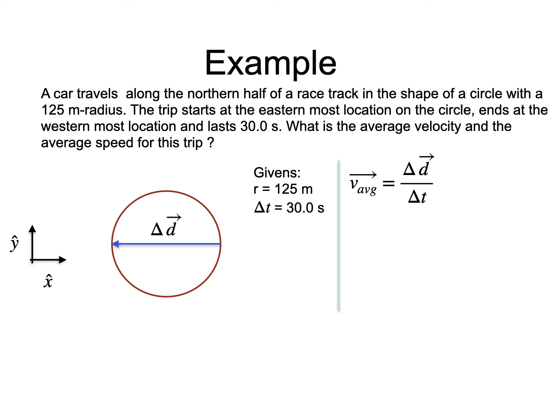If you look at the blue arrow, you can see that the magnitude of the displacement is the diameter of the circle and that the arrow is pointing westward, which is in the opposite direction to x hat. The x component of the displacement is therefore negative.